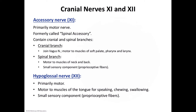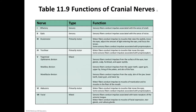Cranial nerve number twelve is the hypoglossal nerve — the last pair. It is primarily a motor nerve that arises from the medulla oblongata and passes into the tongue. Impulses are conducted to the muscles that move the tongue in speaking, chewing, and swallowing. If you need more on this, see table 11.9 on page 425, which gives you all of these nerves in one spot.